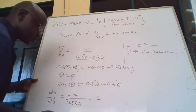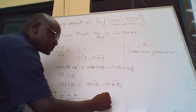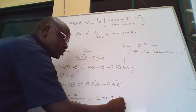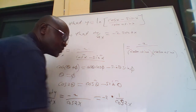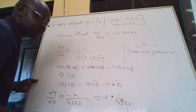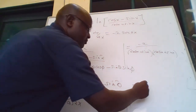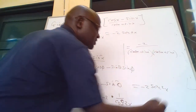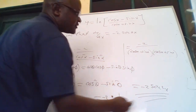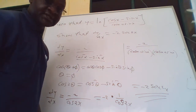So dy/dx equals negative 2 over cos 2x. Since 1 over cos 2x equals sec 2x, this equals negative 2 sec 2x. We have shown the required result. Thank you for watching and listening.